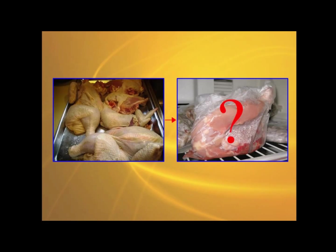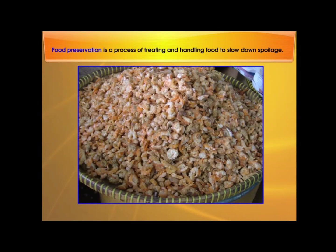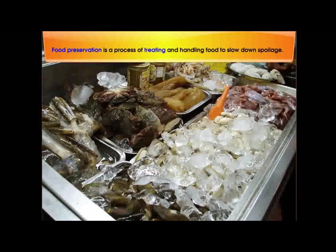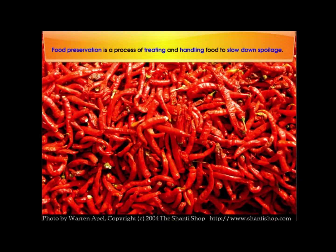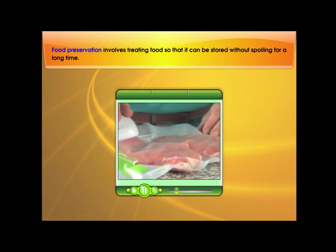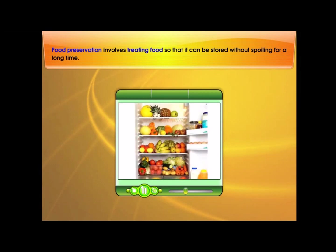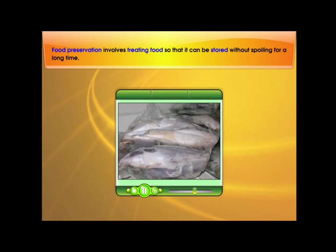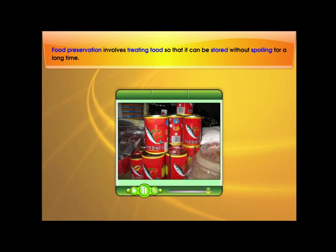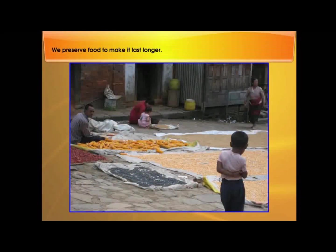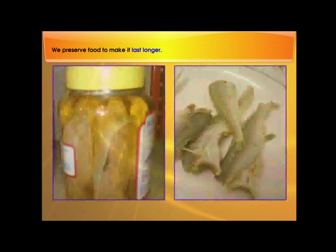What is food preservation? Food preservation is a process of treating and handling food to slow down spoilage. It involves treating food so that it can be stored without spoiling for a long time. We preserve food to make it last longer.